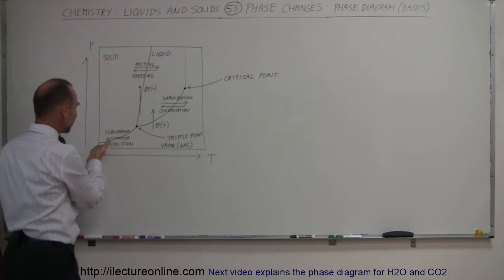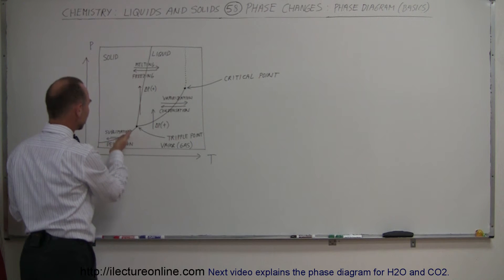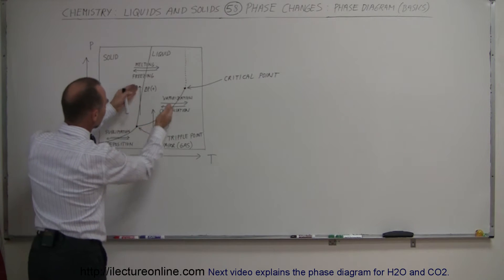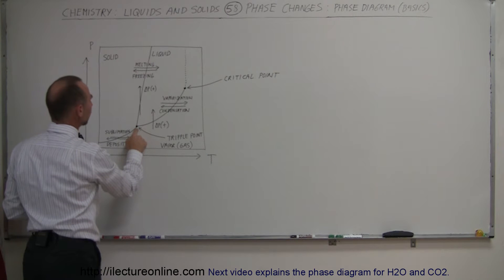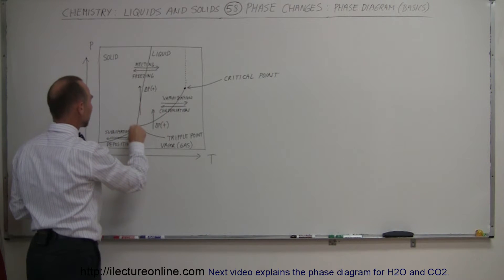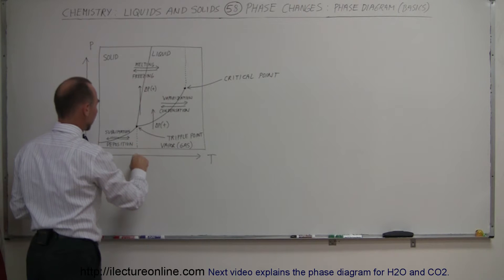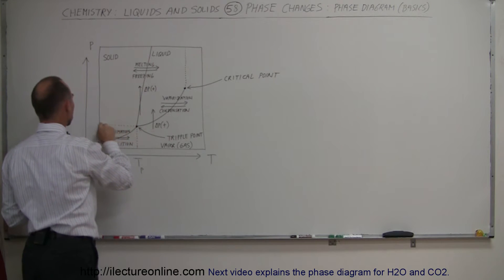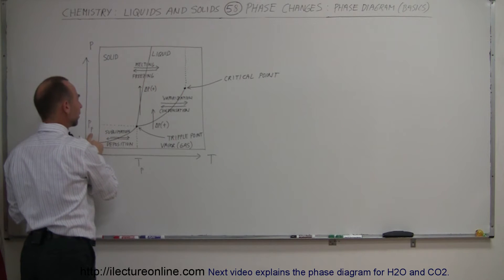Notice that there's a division here. We have a line that goes up here and then it splits up into two. Where it splits up right here, this is called the triple point. This is the point where at a particular temperature, T sub T, and at a particular pressure, P sub T.